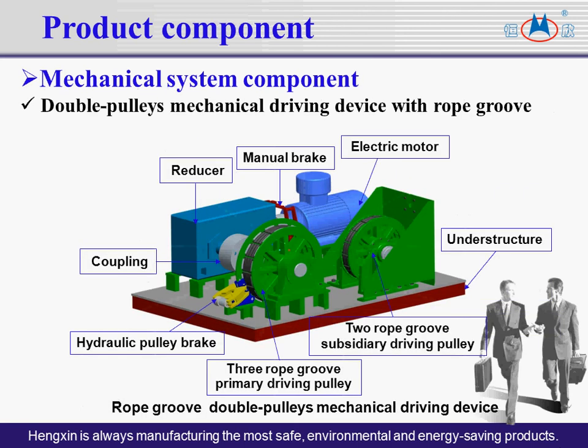A double pulley mechanical driving device with a rope groove consists of an electric motor, manual brake, reducer, coupling, hydraulic pulley brake, three rope groove primary driving pulley, two rope groove subsidiary driving pulley, and under frame.